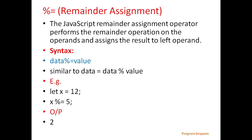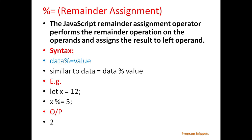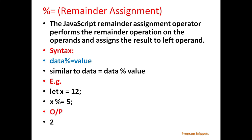Next is remainder assignment. The remainder assignment operator performs the remainder operation on the operand and assigns the result to the left operand. General syntax is: data %= value, which is similar to data = data % value. For example, let x = 12, then x %= 5, which gives the output 2 — it performs 12 mod 5 and gives the remainder 2.